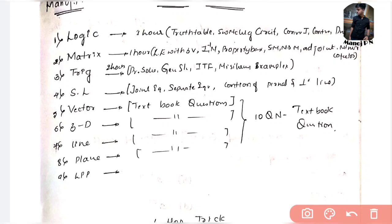The third topic is trigonometry. You need to spend about two hours on this because it is one of the most tricky ones. What you need to learn here is the general solution, particular solution, inverse trigonometric formulas, and the miscellaneous examples from the trigonometry textbook — don't skip those.